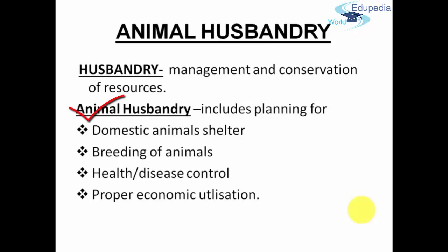Animal husbandry not only talks about breeding, caring and feeding of these animals but also includes proper planning. This planning covers domestic animal shelter — how they should be sheltered, where they should stay, and what the condition of their place of stay should be, since every animal requires a different kind of place. Animal husbandry also talks about breeding of animals and takes care of their health, care and protection.